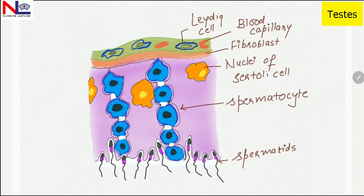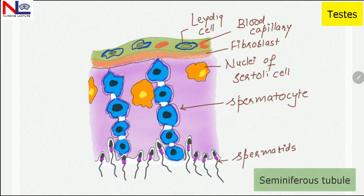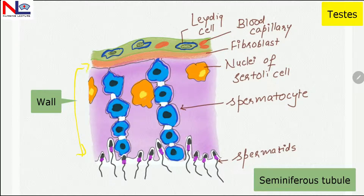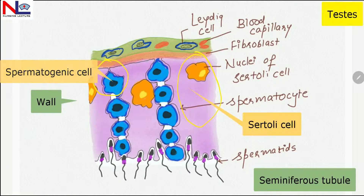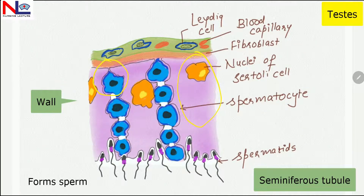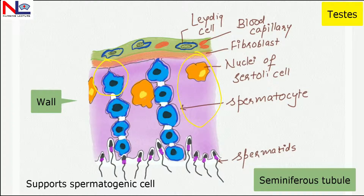Here in this figure we can see the interior of a seminiferous tubule. This is the wall of the seminiferous tubule, in which you can see the process of spermatogenesis. There are two types of cells within it: the spermatogenic cells and the Sertoli cells. The spermatogenic cells form the sperm, and the Sertoli cells support these sperm cells.